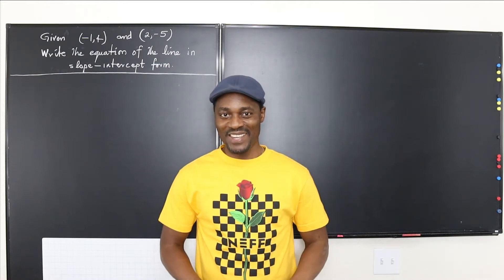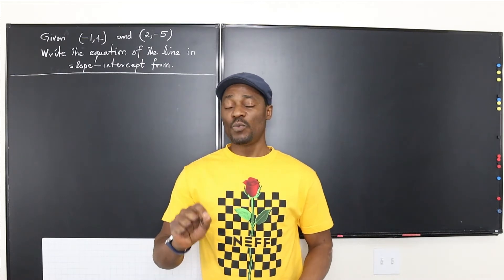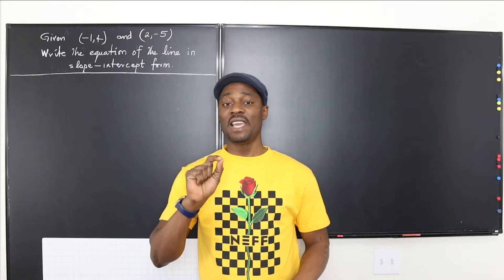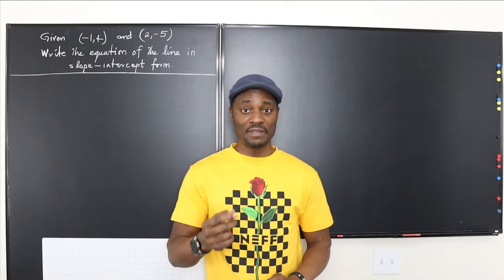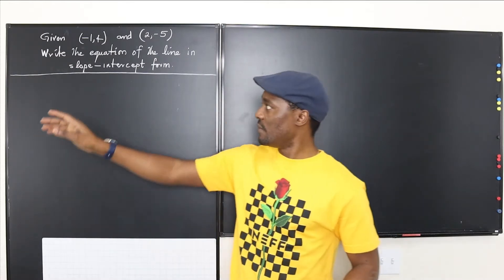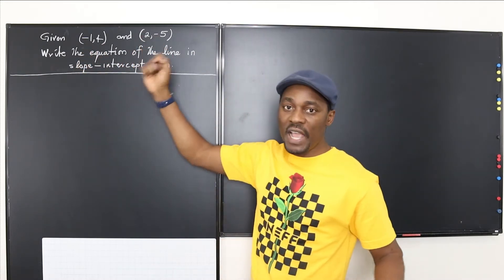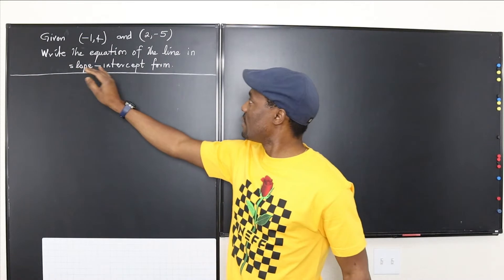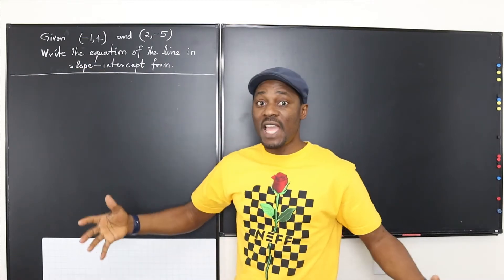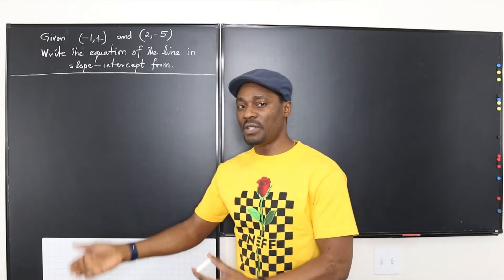Hello and welcome to another video. In this video, we will be finding the equation of a straight line given two points. If you look at this question, you're given two points: negative one, four, and two, negative five, and we're supposed to write the equation of the line and leave the answer in slope-intercept form.